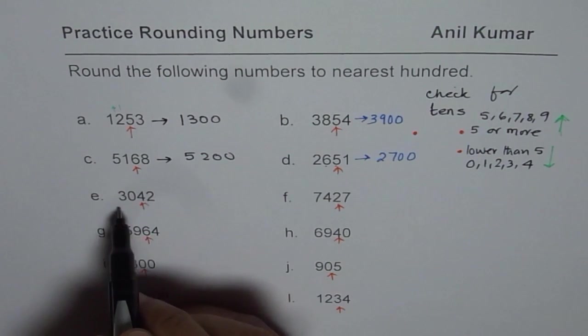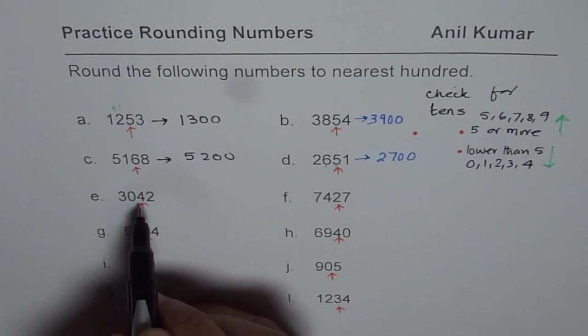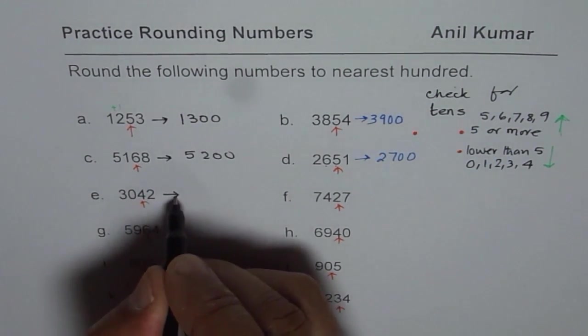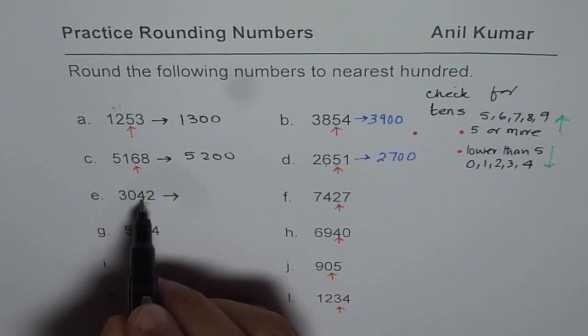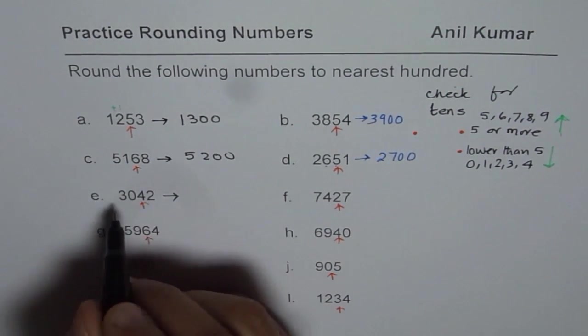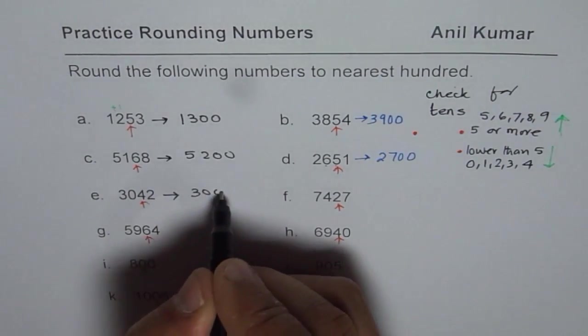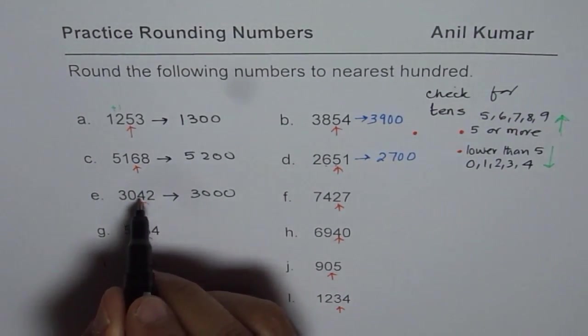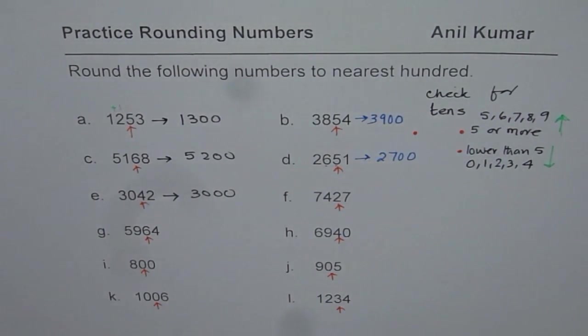The next number here is 3042. Tenth place, we have 4. 4 is lower than 5. So this rounds lower. So we get 3000. So in this case, just make 4 and 2 both as 0. That gets you lower number.